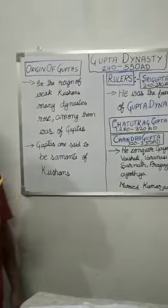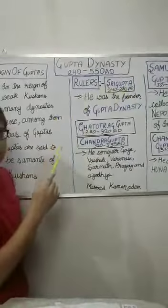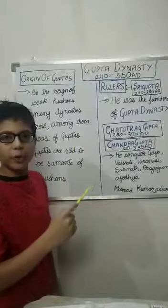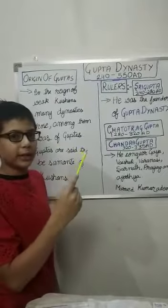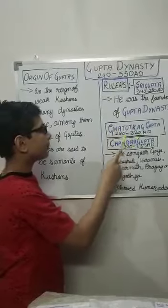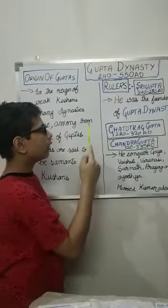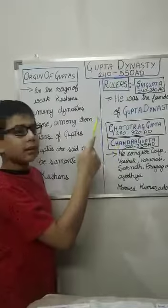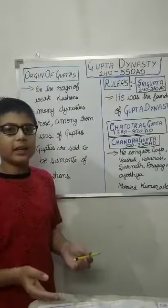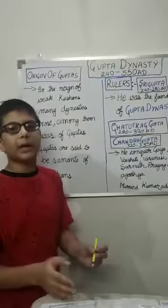Now let's talk about their rulers. Shri Gupta was the founder of the Gupta dynasty and his reign was 240 AD to 280 AD. His son, Ghatotkacha Gupta, ruled from 280 AD to 320 AD. Shri Gupta and Ghatotkacha did not do any territorial expansion or any great work — they ruled over Pataliputra alone.